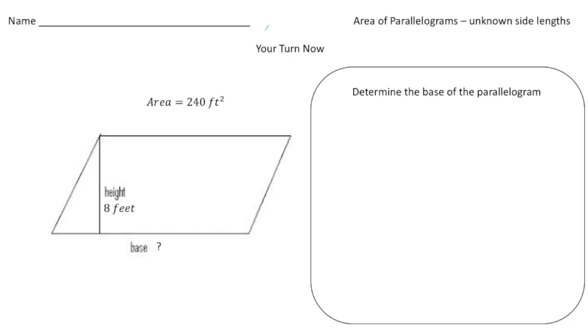Welcome back. Let's do this practice problem. Here we have a parallelogram and we know that the area is 240 square feet, and we know that the height is 8 feet, and we want to solve for the base. Again, we still use the same formula: area equals base times height.